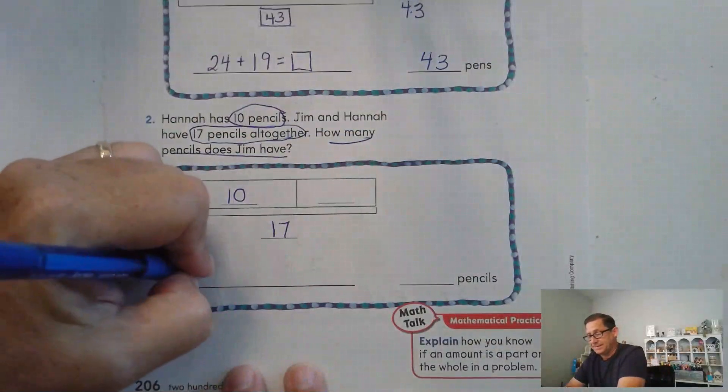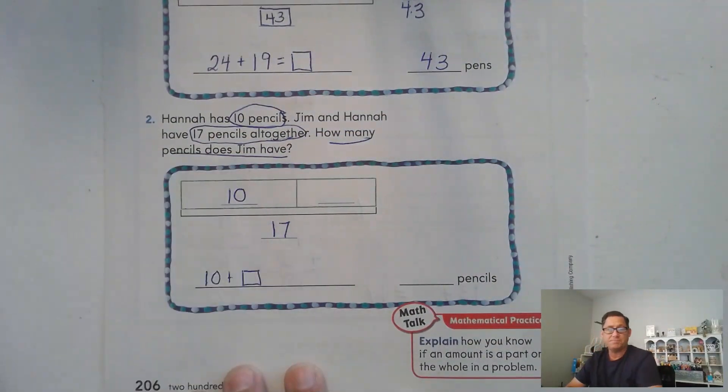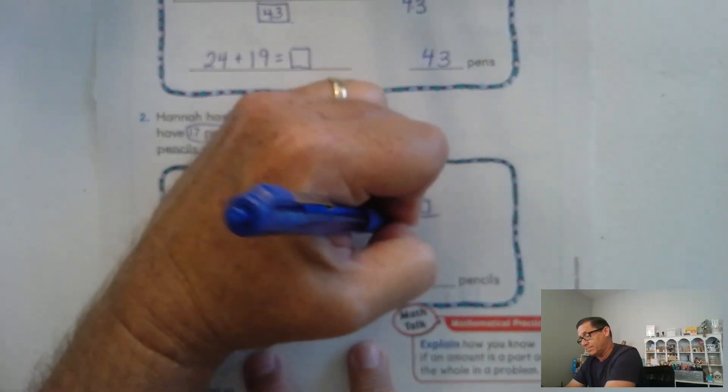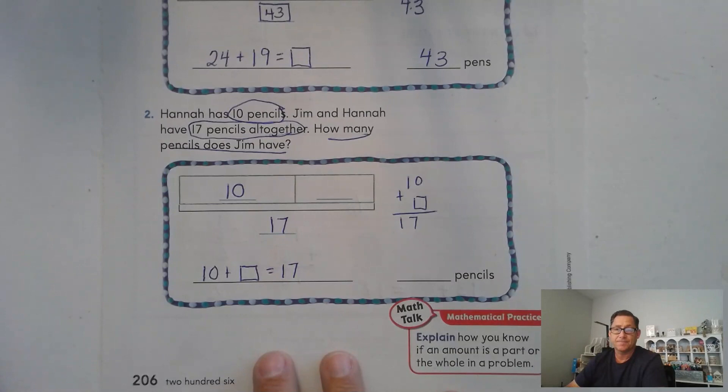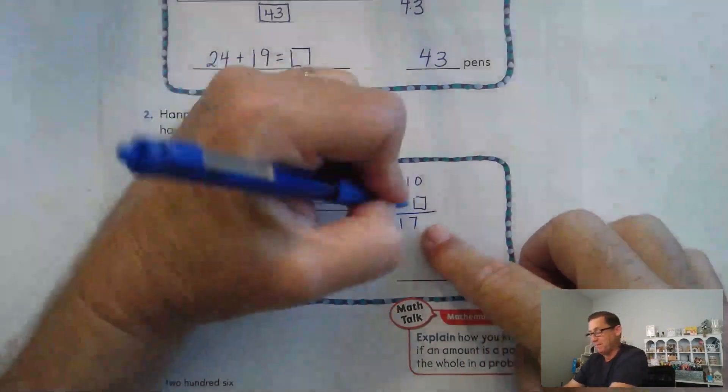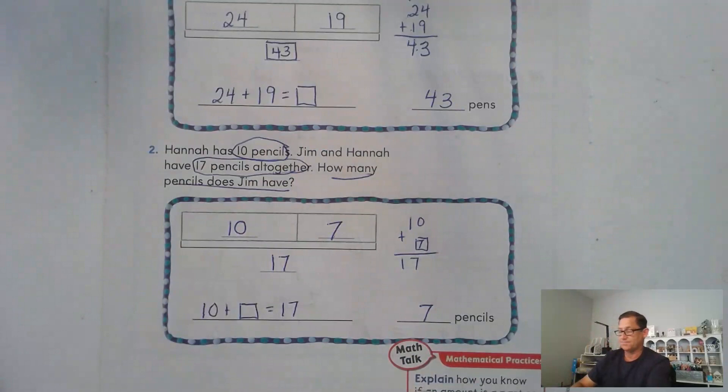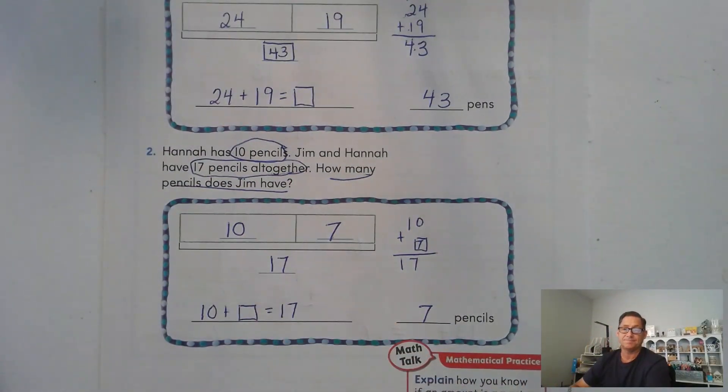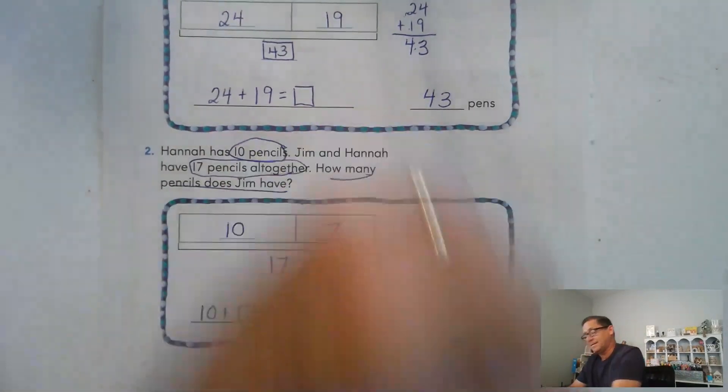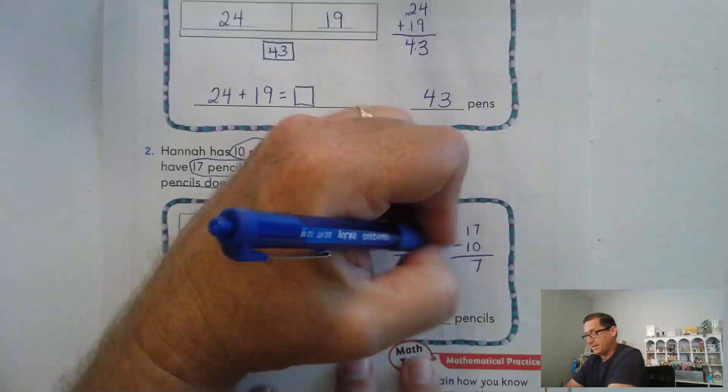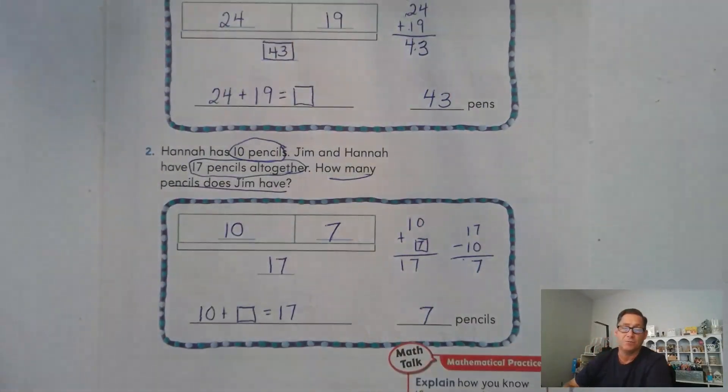So our number sentence is 10 plus Jim's amount equals 17. That's what it would look like if we were adding vertically. But remember that 10 plus what equals 17 is the same as saying 17 minus 10 is what? So 0 plus what would give me 7 ones? 7, right? So Jim has 7 pencils. 10 plus 7 is 17. I could have written it like this. 17 minus one of the addends will give us the missing addend. 7 take away 0 is 7. And 1 ten take away 1 ten is 0. So we just wind up with 7.